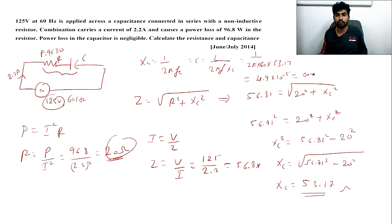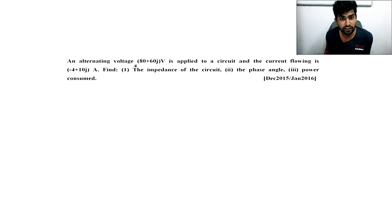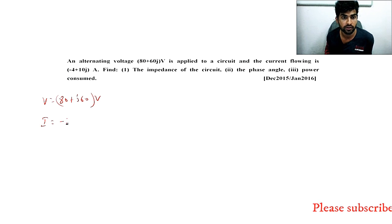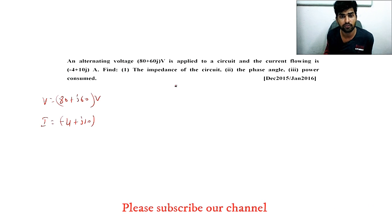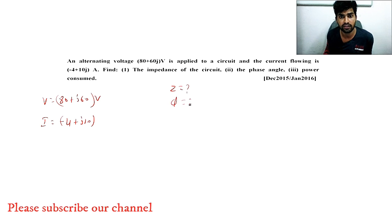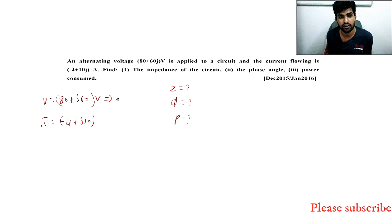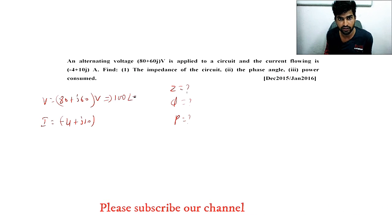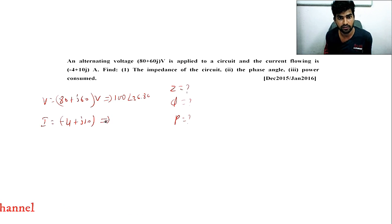Next problem: an alternating voltage of 8 + j60 volts is applied to a circuit and the current flowing is −4 + j10 amps. Find the impedance of the circuit, the phase angle, and power consumed. Converting voltage to polar form gives 100 ∠36.86°, and current converts to 10.77 ∠111.80°.